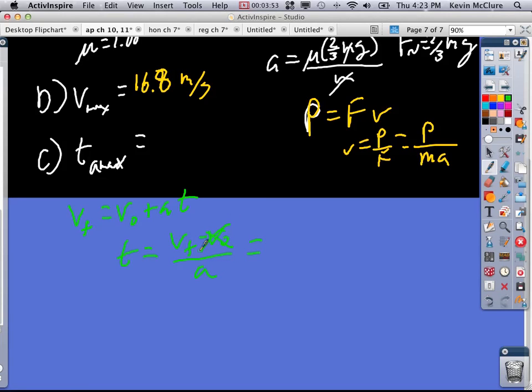V0 is 0. We're seeing it started from rest. So that means 16.8 over 6.53, I believe. Yes. And 16.8.